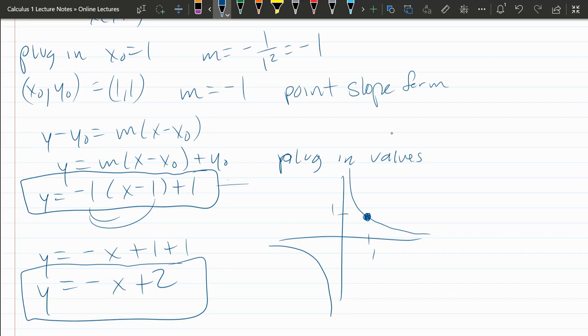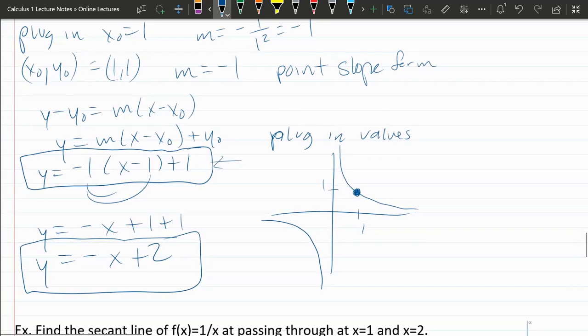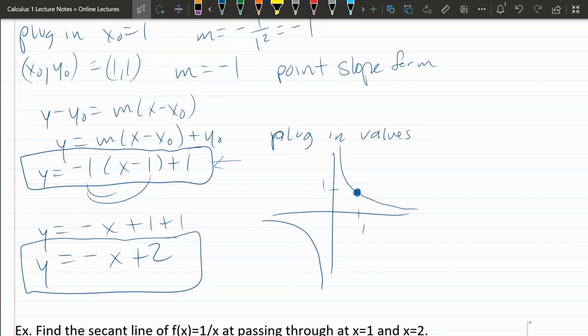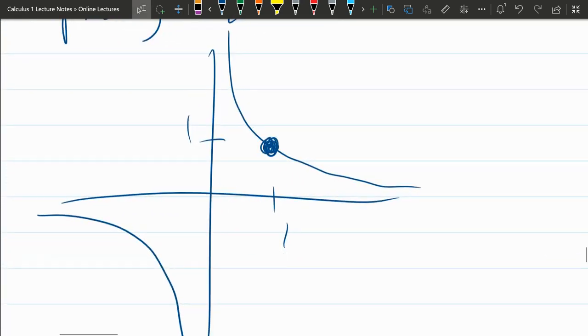Now if we think in terms of point-slope form, our function, or our line, goes through the point one, one and a slope of negative one. So really to graph this line, we could have just looked at this information and graphed it. So it goes through the point that's here on the graph. Slope of negative one. So it goes to the right one, down one.